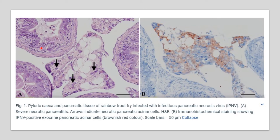A diagram shows the pyloric ceca in the pancreatic tissue of rainbow trout infected with IPNV. In panel A, severe necrotic pancreatitis is shown, with arrows indicating necrotic pancreatic acinar cells stained with hematoxylin and eosin.